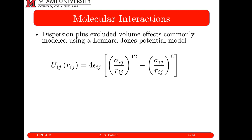To describe dispersion plus excluded volume interactions, a common model is the Lennard-Jones potential. London told us that the interaction energy U_ij scales as 1 over R_ij to the 6th power. In the Lennard-Jones potential model, U_ij has two terms: the second term accounts for attractive London dispersion interactions — it is proportional to 1 over R_ij to the 6th — and it is negative because dispersion interactions are attractive, giving a negative interaction energy.